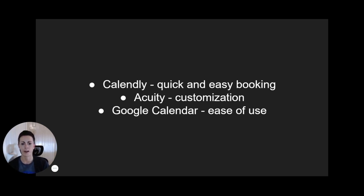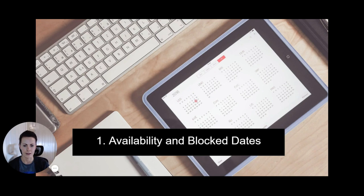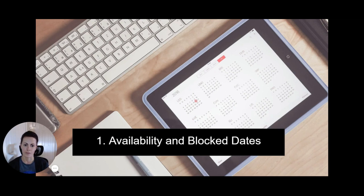Keep in mind, we're using Bubble as our app builder because it has the power to support all these features and more. So let's walk through some of the common features you might need. The first is creating availability and blocked dates. Users who offer a service will need to indicate when they're available and not available to accept bookings. For example, users can say they're only available Monday through Friday from 12 to 5 p.m. This is one of the more basic features you might need.